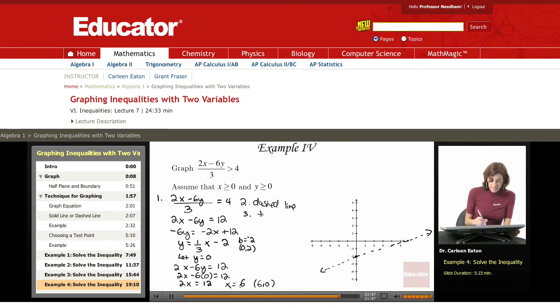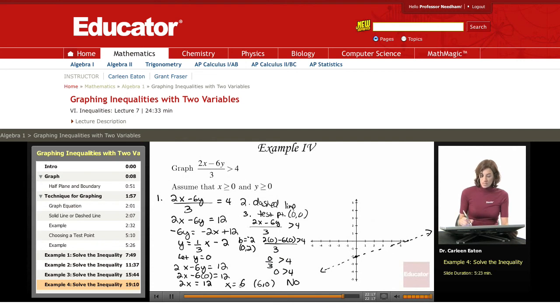I use my test point of 0, 0, and I go back to my original inequality. 2x minus 6y divided by 3 is greater than 4. So 2 times 0 minus 6 times 0, all divided by 3, is greater than 4. 0 divided by 3 is greater than 4. So I come up with 0 is greater than 4. Is 0 greater than 4? No. Since that does not satisfy the inequality, this point is not in the correct half plane.